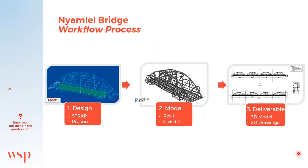The workflow process followed for this project is as follows. The designs and design checks were done in STRAP and Procon. The structure was then modelled in Revit and Civil 3D. The deliverables were then produced in the form of 2D drawings prepared in Civil 3D.